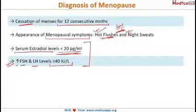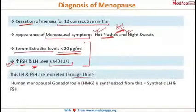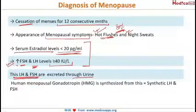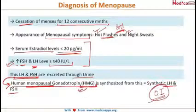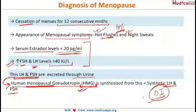The increased FSH and LH in menopausal females is excreted via the urine, so urine will have increased LH and FSH levels. This is used for the synthesis of HMG — human menopausal gonadotropin — which is synthesized from the urine of postmenopausal females. HMG is used in ovulation induction because it contains FSH and LH, each at 75 international units.